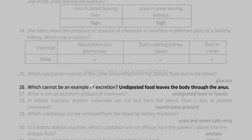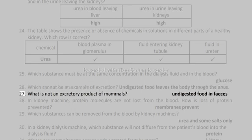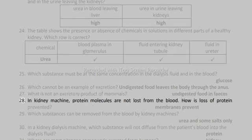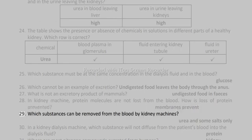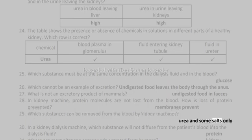26. Which cannot be an example of excretion? Undigested food leaves the body through the anus. 27. What is not an excretory product of mammals? Undigested food in feces. 28. In a kidney machine, protein molecules are not lost from the blood. How is loss of protein prevented? Membranes prevent it. 29. Which substances can be removed from the blood by kidney machines? Urea and some salts only.